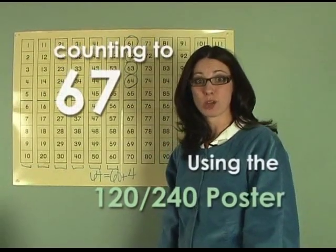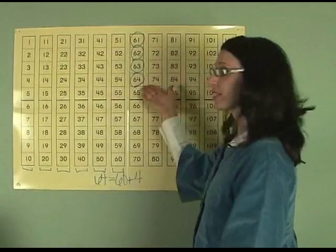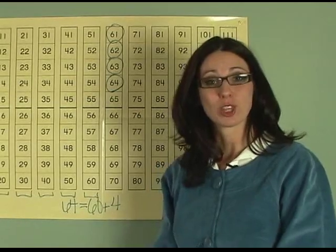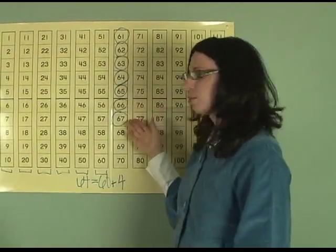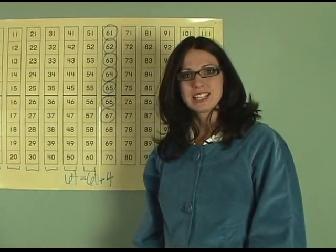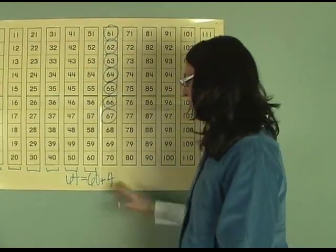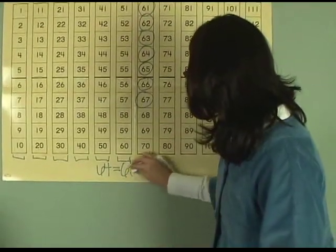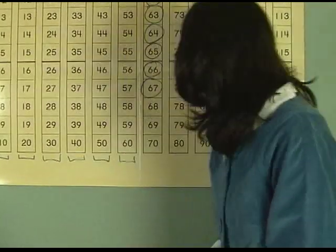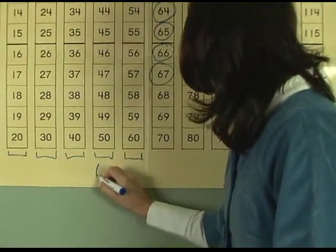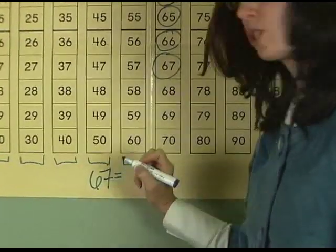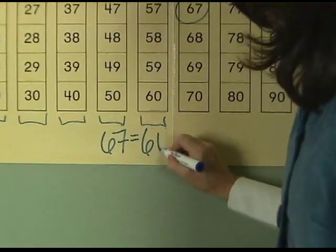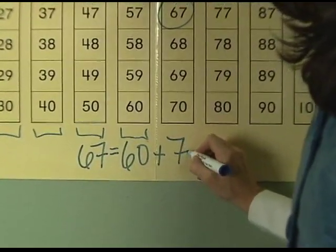Boys and girls, yesterday we added 3 to get our total of 64. Today we are going to add another 3. Let's find out what the total will be. 64 plus 3 is equal to 67. Did I make a new 10? No, so I will not place my bracket here. What I will need to do is change my equation. My equation will then begin by saying 67 is equal to 60 plus 7.